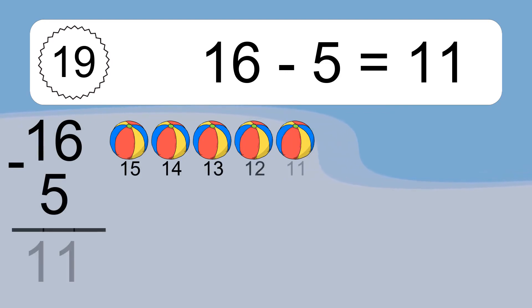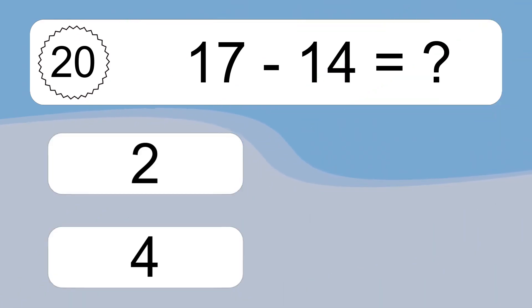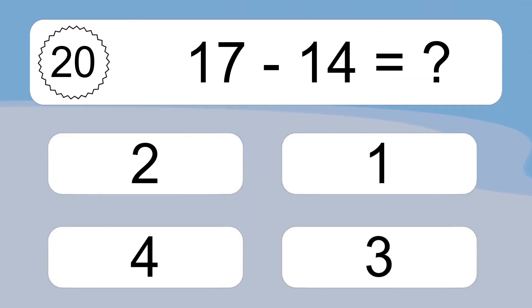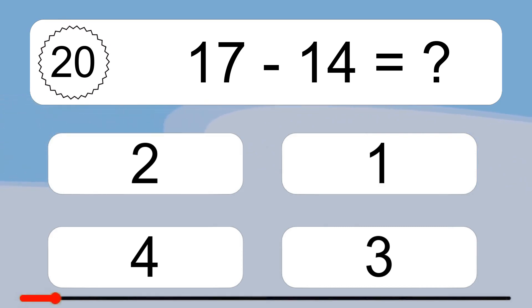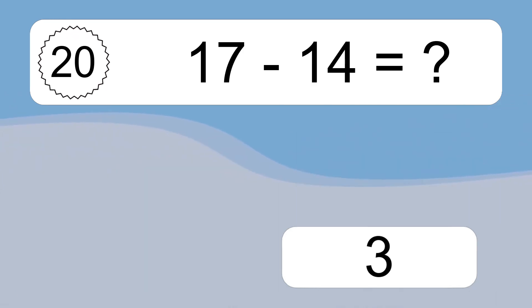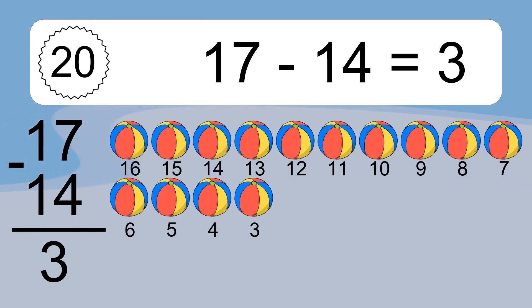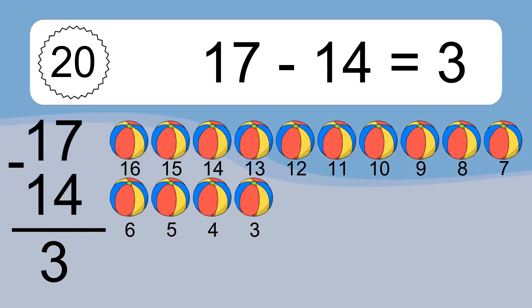16 minus 5 equals 11. Let's count it: 15, 14, 13, 12, 11. 17 minus 14 equals what? 17 minus 14 equals 3. Let's count it: 16, 15, 14, 13, 12, 11, 10, 9, 8, 7, 6, 5, 4, 3.